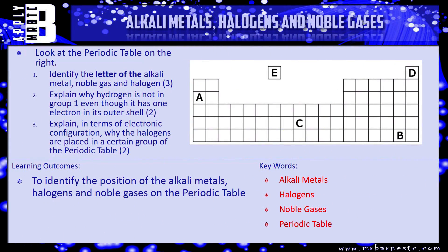Hopefully that was fairly straightforward. Let's see what the examiners can actually ask you to do with this. I've got three questions all to do with the periodic table you can see on the right. The first one is: identify the letter of the alkali metals, the noble gases and the halogens on that periodic table — give me either A, B, C, D or E for each of those three.